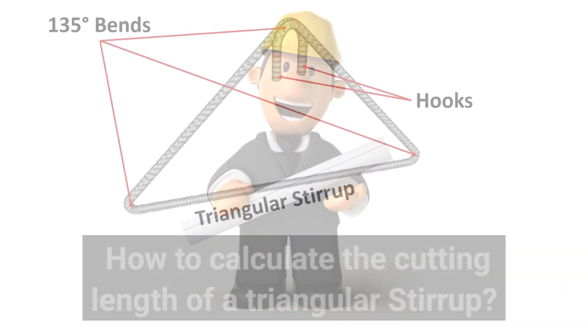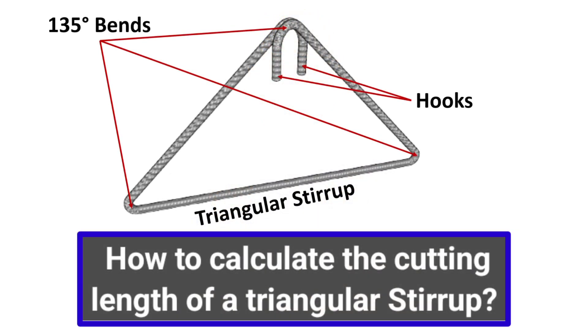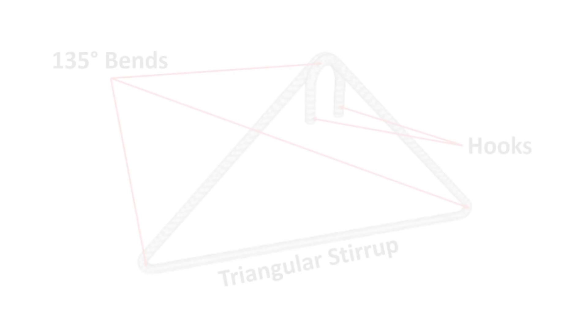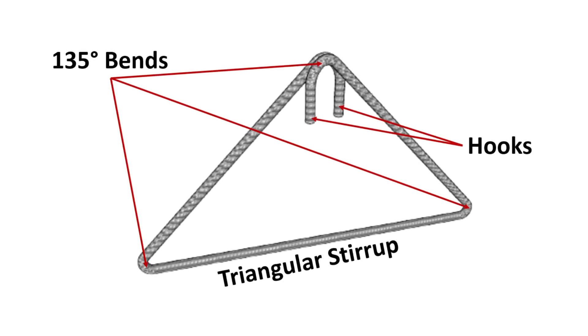In this lecture, I am going to discuss how to calculate the cutting length of a triangular stirrup. As you can clearly visualize from this picture, a triangular stirrup consists of 4 bends of 135 degrees each along with 2 hooks inclined at the same angle.